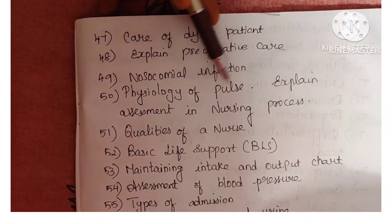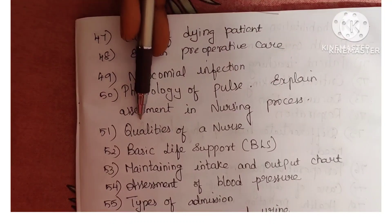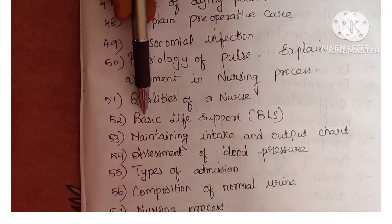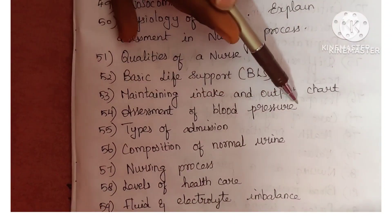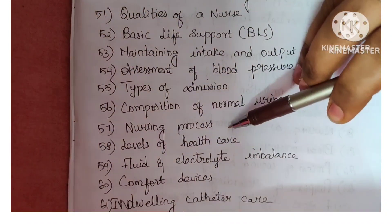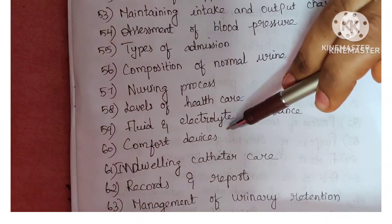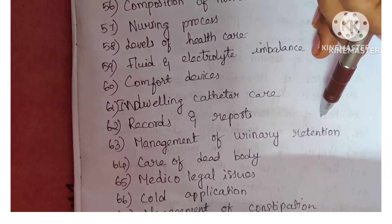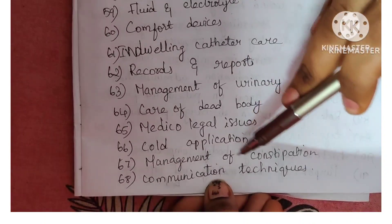Next is care of dying patient. Next is pre-operative care. Next is nosocomial infection. Next is physiology of falls. Next is assessment in the nursing process. Next is qualities of a nurse. Next is basic life support. Next is maintaining intake and output chart. Next is assessment of blood pressure. Next is types of admission. Next is composition of normal urine. Next is nursing process. Next is levels of health care. Next is fluid and electrolyte imbalance. Next is comfort devices. Next is in-dwelling catheter care. Next is records and reports. Next is management of urinary retention. Next is care of dead body. Next is medico-legal issues. Next is cold application.